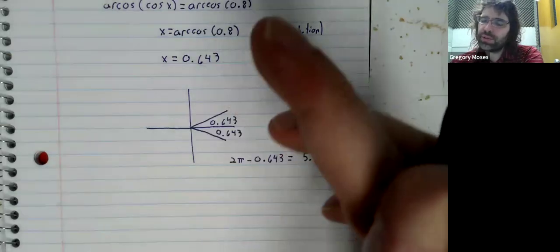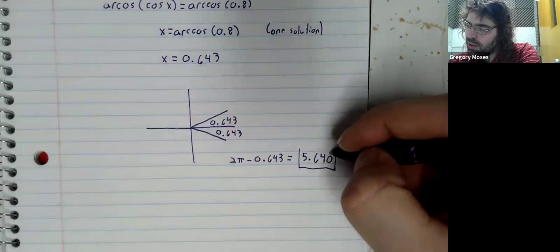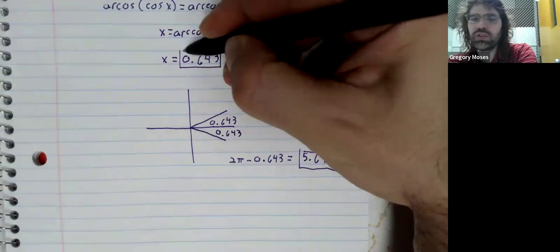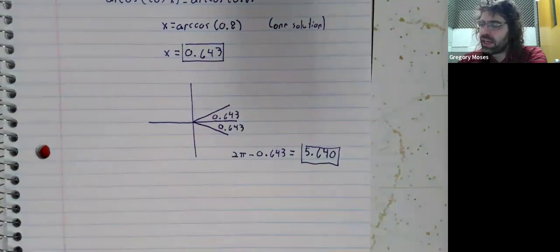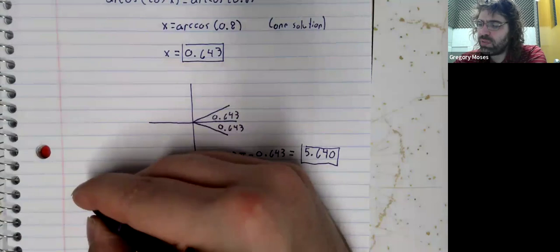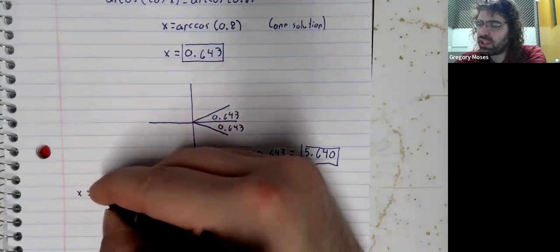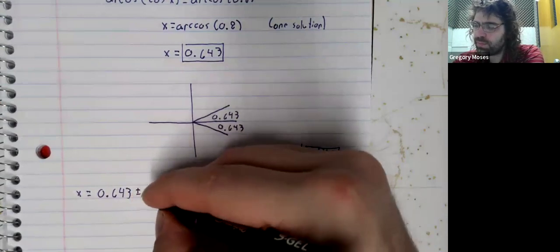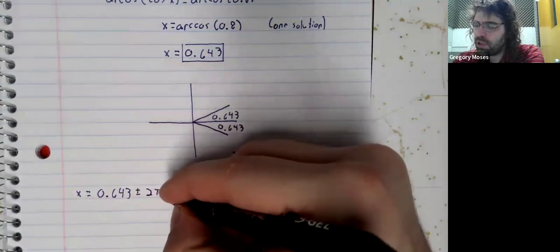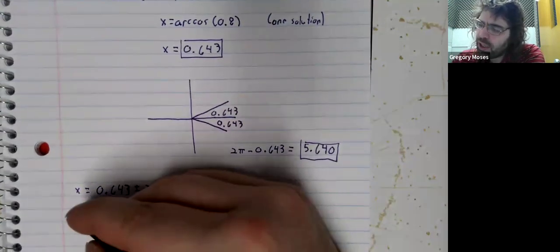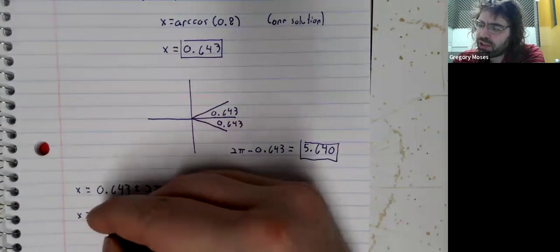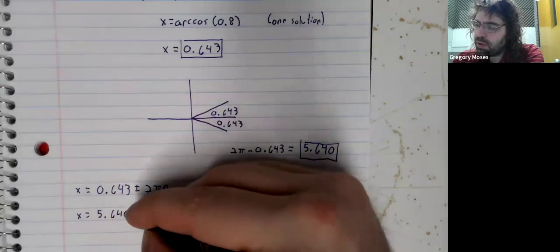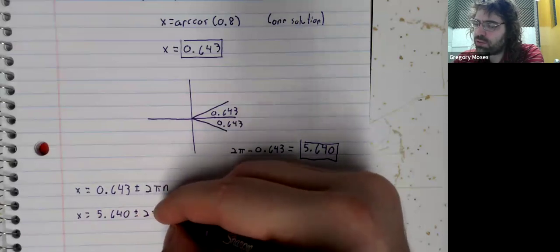We get an angle in the fourth quadrant. We've gotten an angle in the first quadrant. And now, once again, because of periodicity, we actually have an infinite number of solutions.